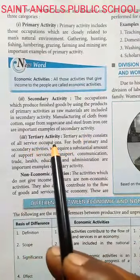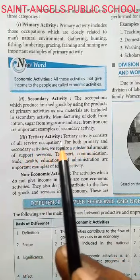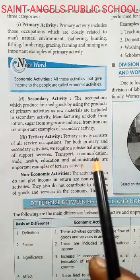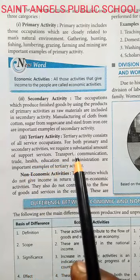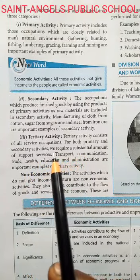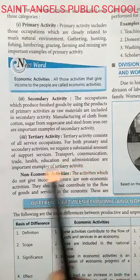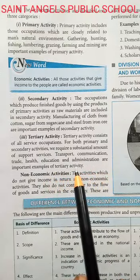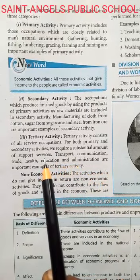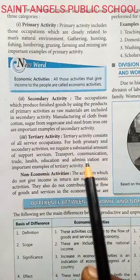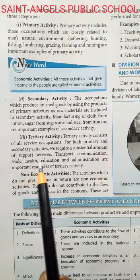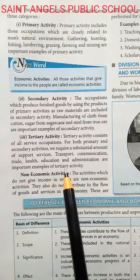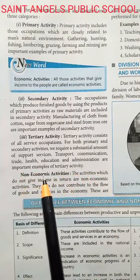Third category is tertiary activities. Tertiary activity consists of all service occupations — tertiary activity में सेवाएं आती हैं। For both primary and secondary sectors we require a substantial amount of support services. Primary and secondary sector के development के लिए हमें बहुत सारी सेवाओं की जरूरत पड़ती हैं। Transport, communication, trade, health, education and administration are important examples of tertiary activity — यातायात, दूरसंचार, व्यापार, स्वास्थ्य, शिक्षा, विसासन।